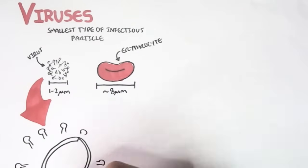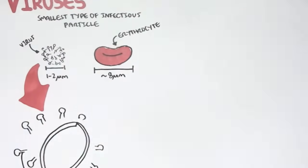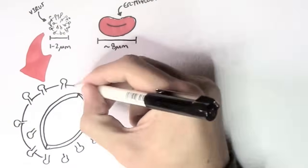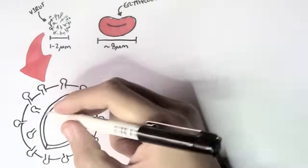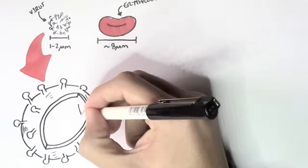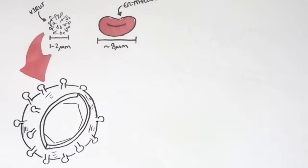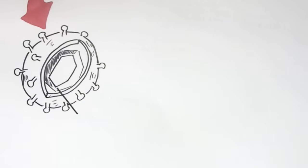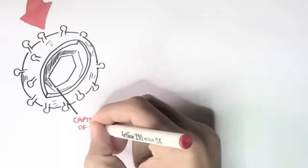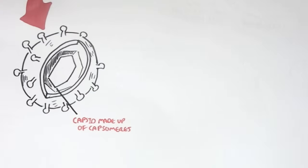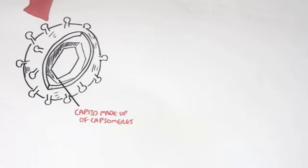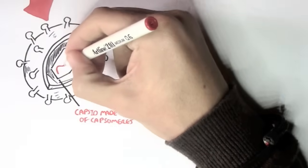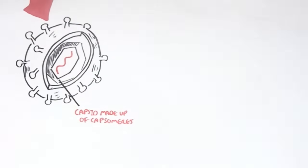The structure of a virus differs between different types of viruses. But as a general rule, here we're just looking at a typical structure of a virus. They contain a capsid, which are made up of capsomere proteins. The capsid is important because inside this capsid, we can find the genetic material of the virus.